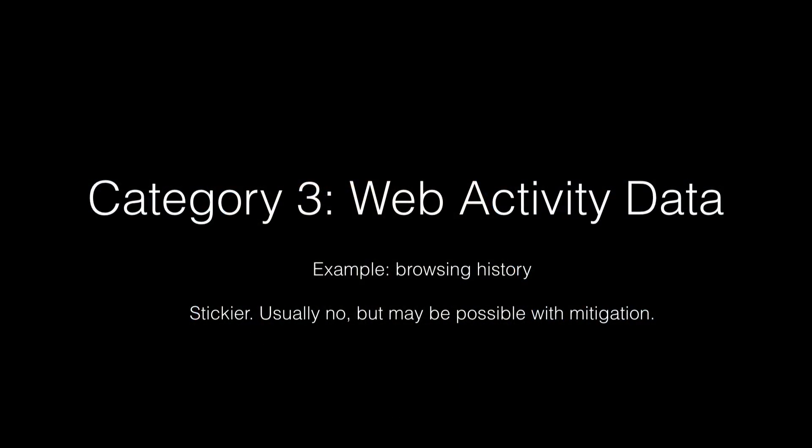Somewhere between category two and category three, there is a giant dotted line where it gets much stickier. The third category is web activity data — the chief example being browsing history, the URLs that you visit. Honestly, most people don't want these collected. Browsing history is a minefield, especially if you pair it with any kind of identifying information. If you are old enough, you may remember AOL releasing a whole bunch of weblogs. They were anonymized — and "anonymized" is one of the scariest words in the English language. It was pretty possible to extract who had done what and which teachers were looking at things on the internet that they shouldn't be.